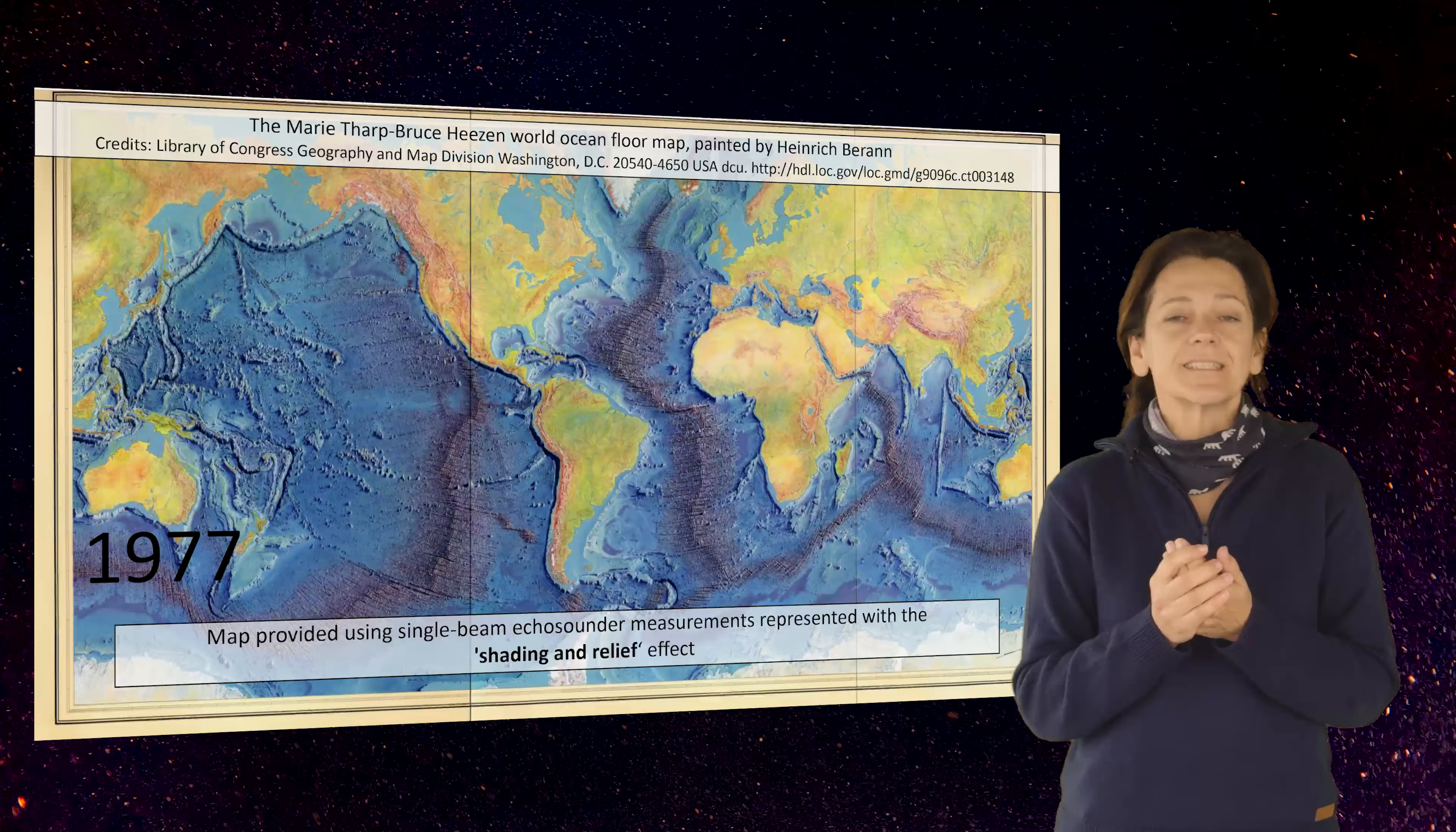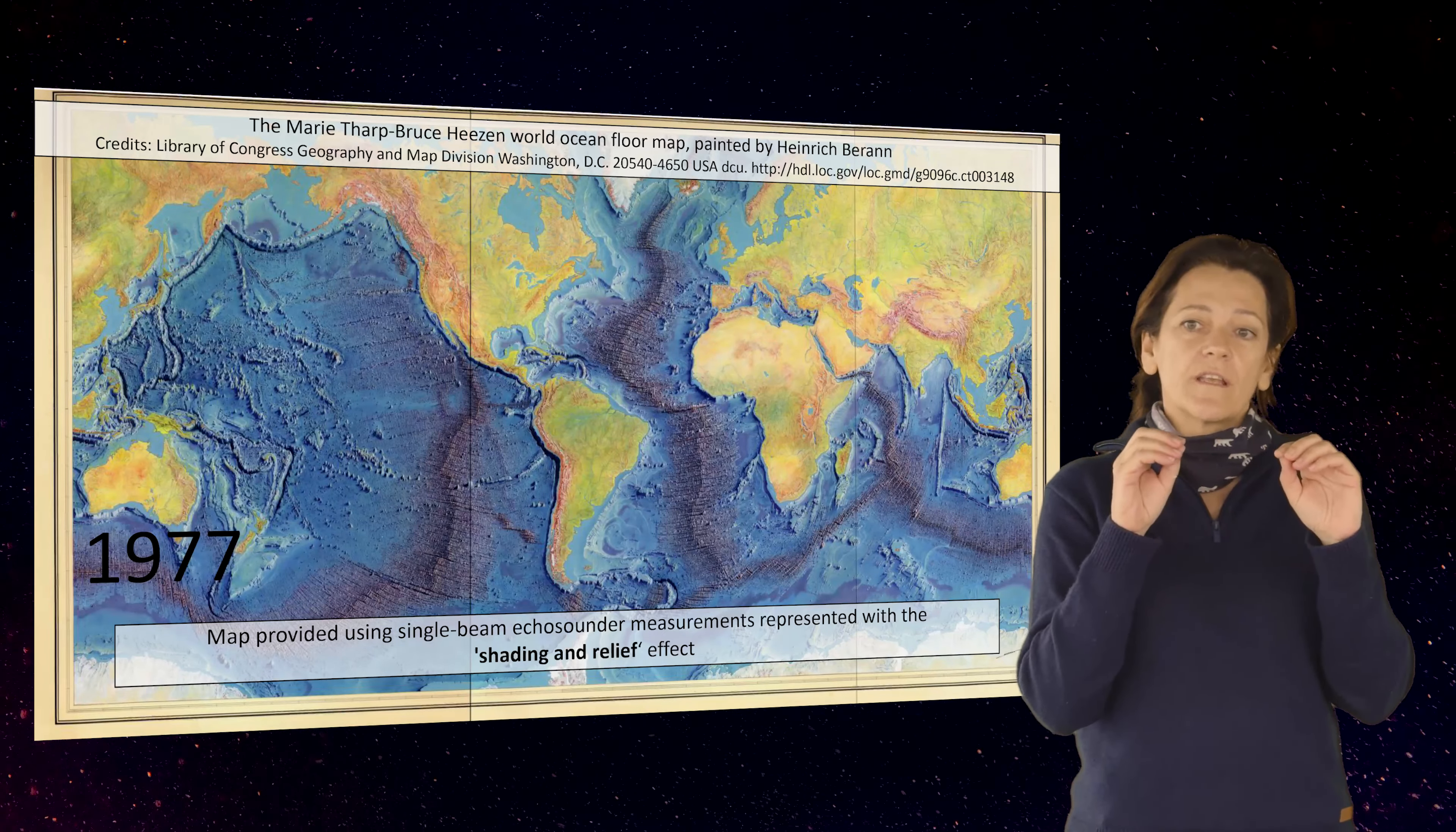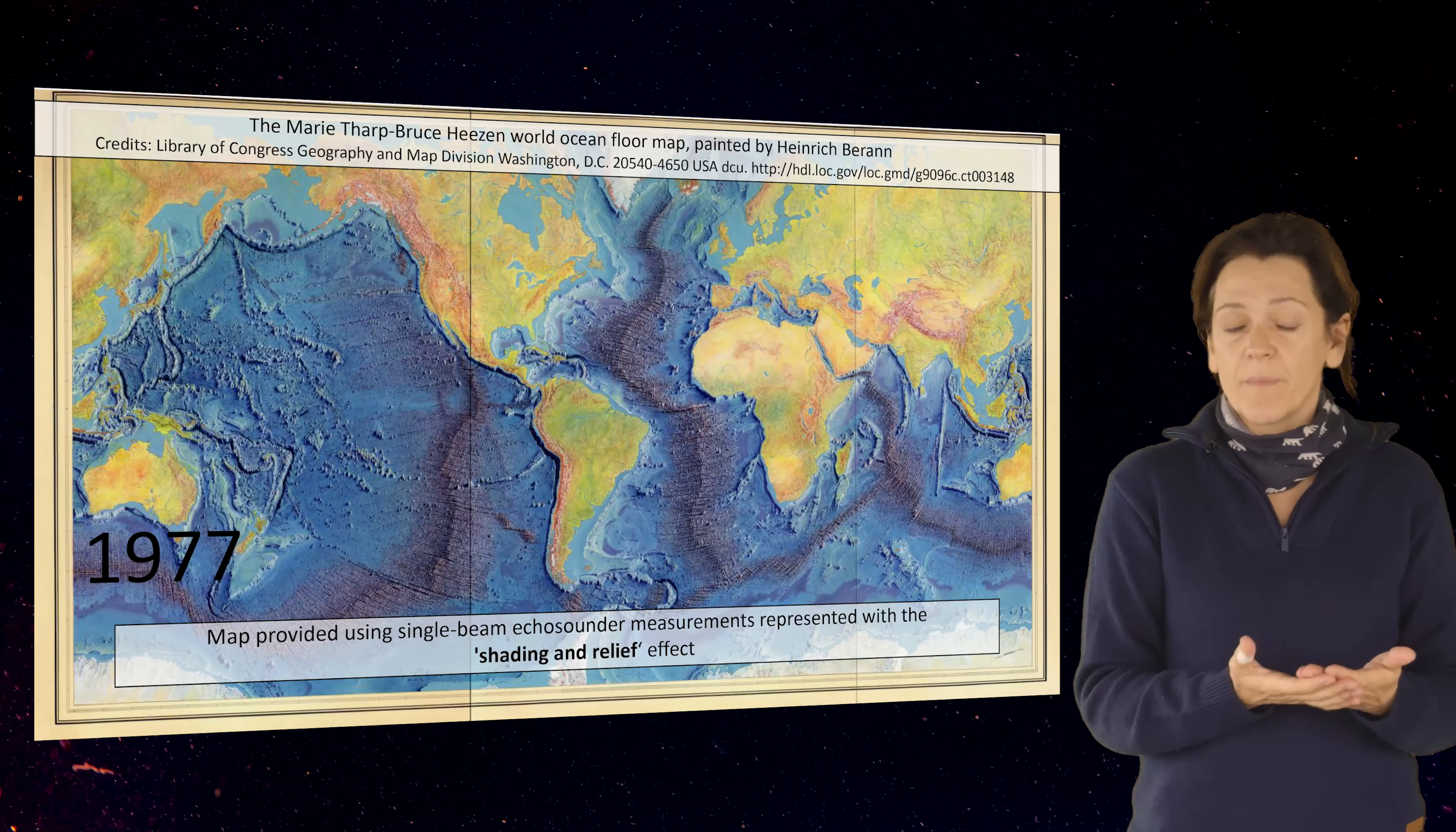The first information we collected regarding the variability of the landscape in the submarine domain were collected using single beam echosounder. And this is a map, the first map that has been produced showing the global ocean seafloor. It's amazing to my opinion thinking that it has been provided also with the support of a painter because they used not only the bathymetric information, so the depth measurement, but they also used the shadow relief effect provided by the support of a painter that gives us the 3D perception. The 3D perception is what changes our understanding when we look at a seafloor map.